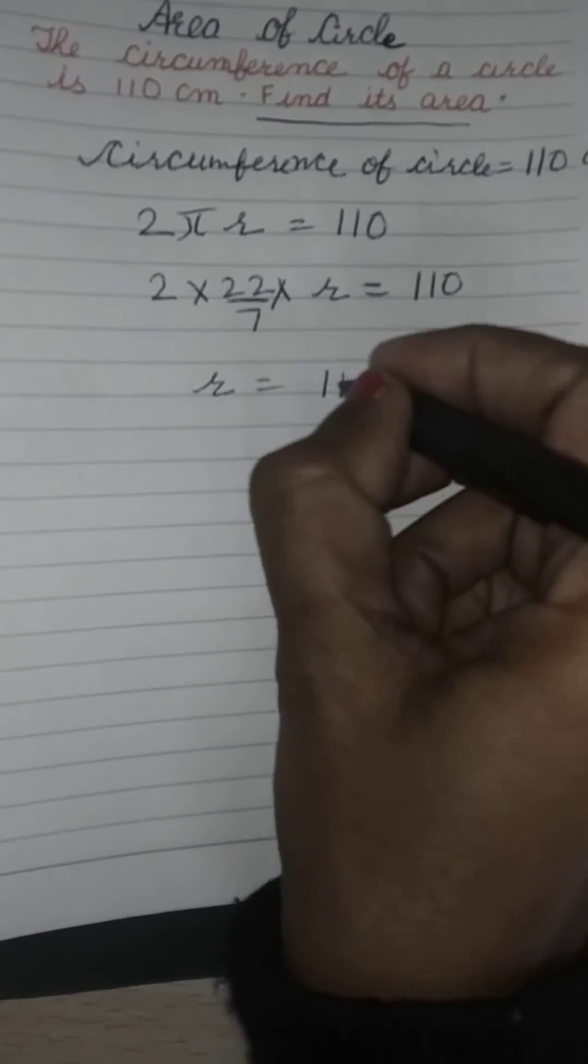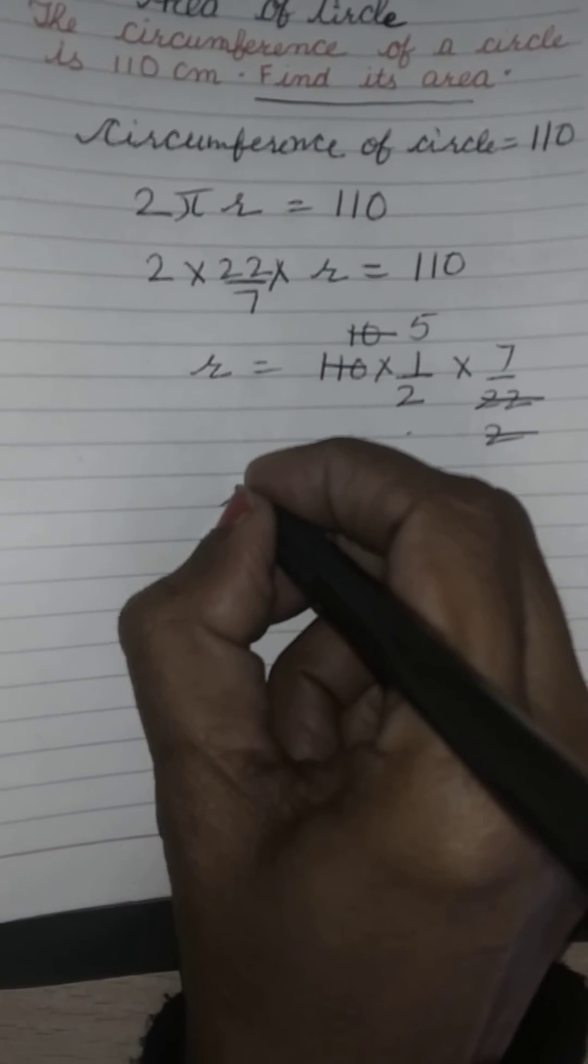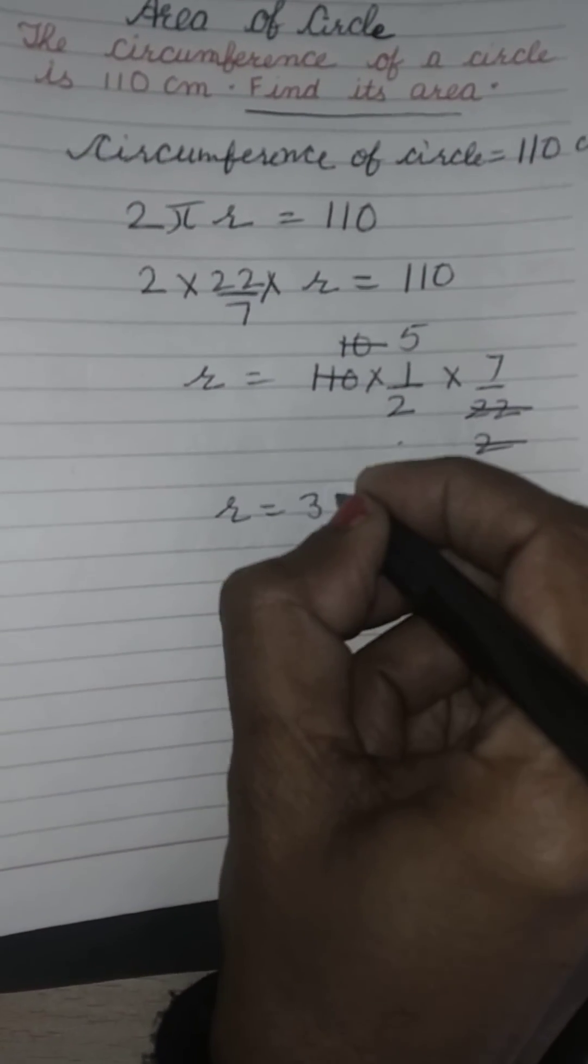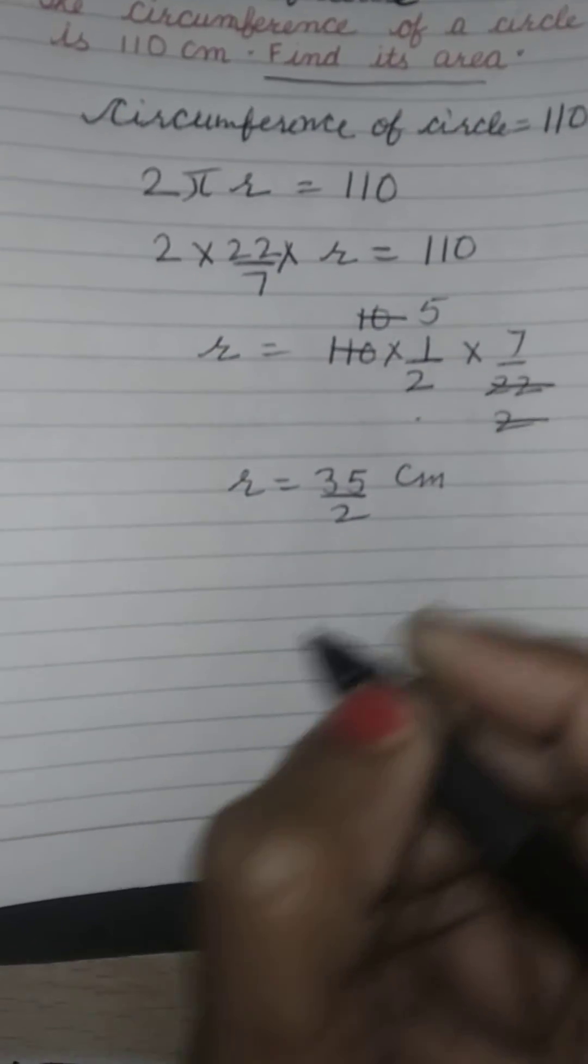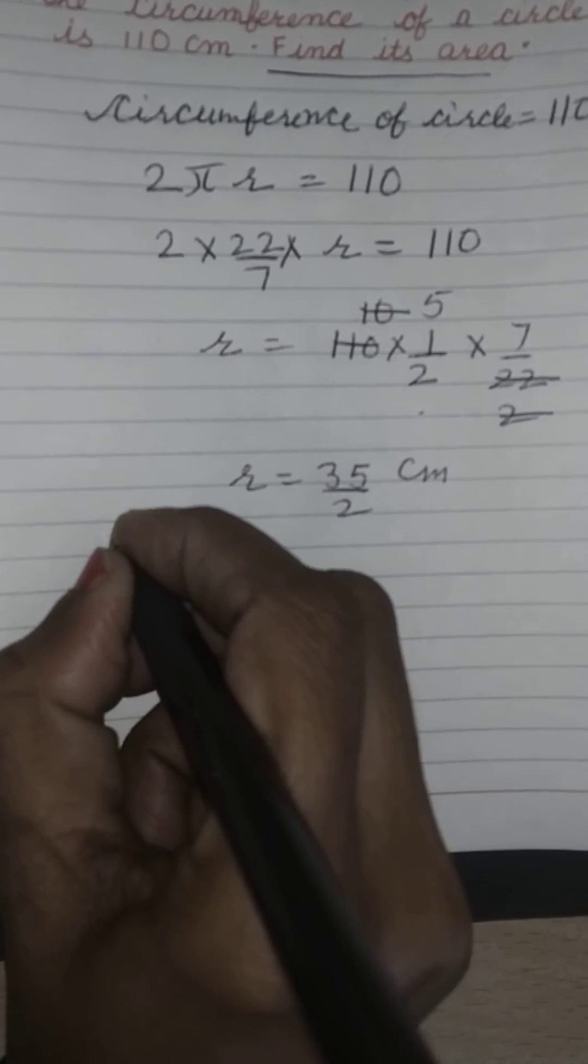Calculating: 110 divided by 2 is 55, then 55 times 7 divided by 22... So the radius equals 35/2 cm. Now,